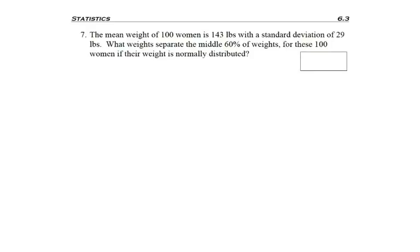So our question reads, the mean weight of 100 women is 143 pounds with a standard deviation of 29 pounds. What weights separate the middle 60% of weights for these 100 women if their weight is normally distributed?